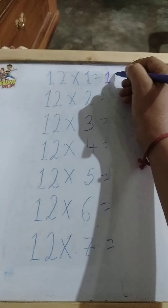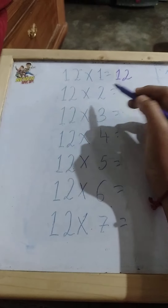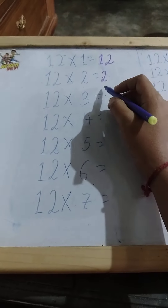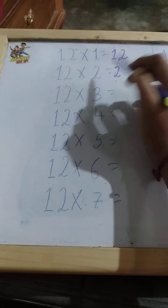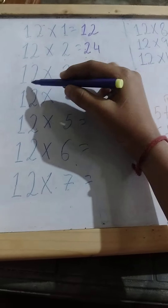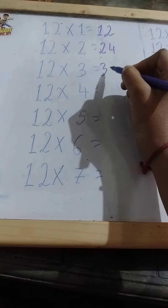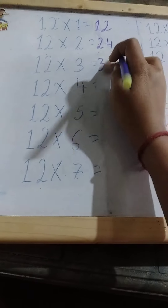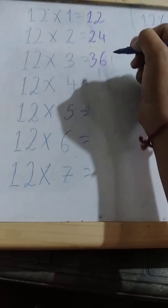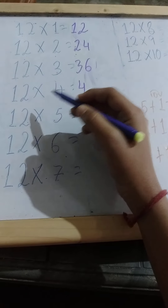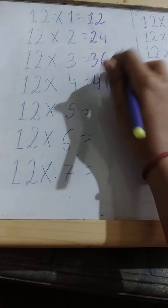For 2, we write 2 and 2. Then 2 ones are 2, so it is 2 and 2. Then 2 twos are 4, so we have written 4. For 3: 3 ones are 3, and 3 twos are 6. For 4: 4 ones are 4, and 4 twos are 8. We have written these down.